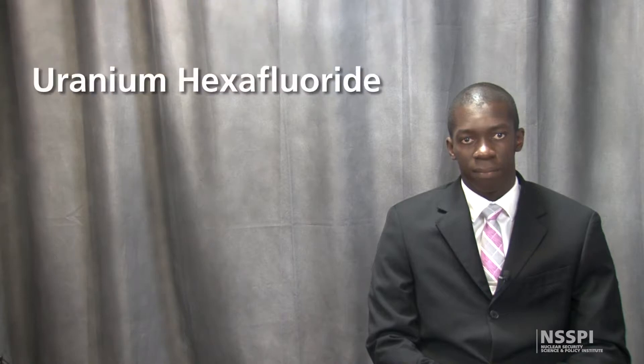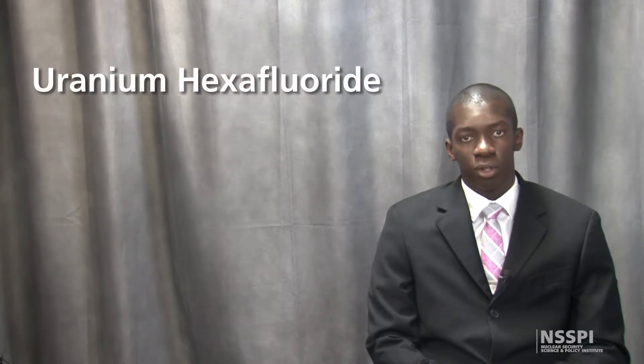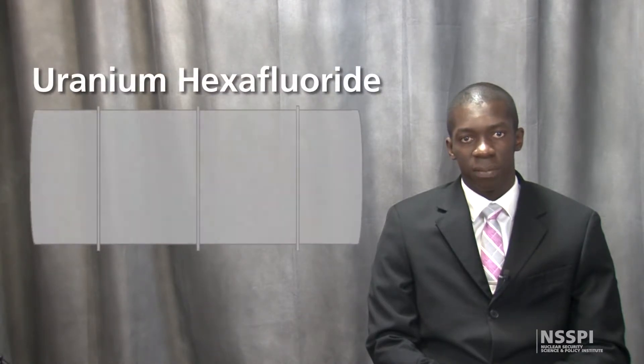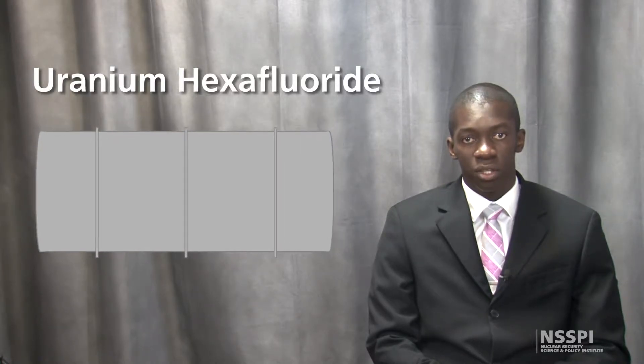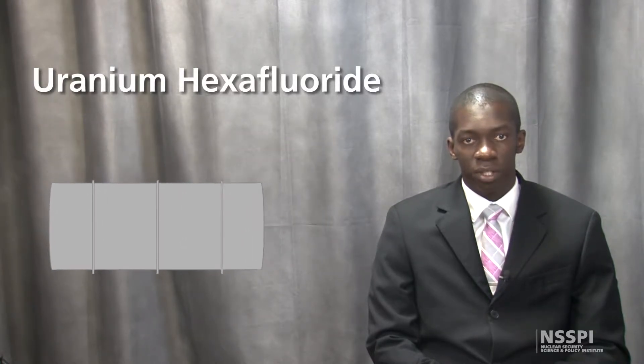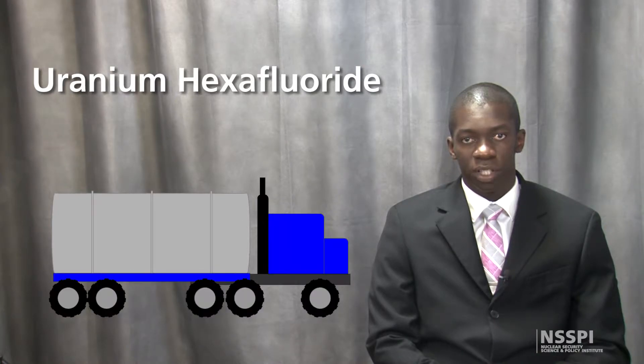Now let's take a look at how material flows through an enrichment plant. Material enters the enrichment plant in the form of uranium hexafluoride. Commercial uranium enrichment facilities typically receive the uranium hexafluoride in large drums that can hold up to 12,500 kg. This UF6 is transported from the conversion plant to the enrichment plant via truck or rail.